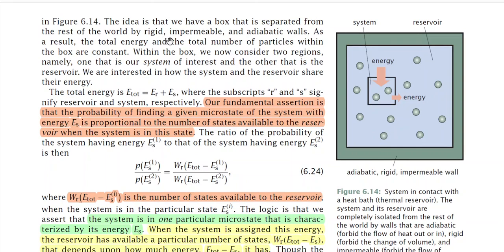The idea is that we have a box separated from the rest of the world by rigid, impermeable, and adiabatic walls. As a result, the total energy and total number of particles within the box are constant. Within the box we consider two regions: the system of interest and the reservoir. We are interested in how the system and the reservoir share their energy, as energy can flow between them. The total energy E_total equals E_r plus E_s, where subscripts r and s signify reservoir and system respectively.